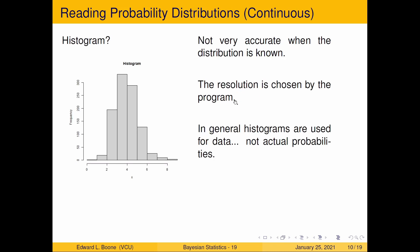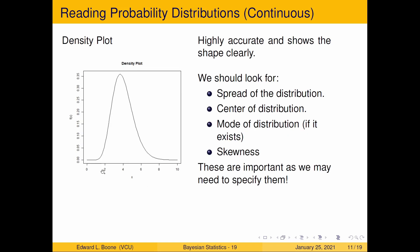So let's talk about a continuous distribution. Again, you can use a histogram, but it's not very accurate when the distribution is known. We know the probability density, so why would we use a histogram? The resolution is chosen by the program you use — maybe R or SPSS — and you're stuck with it. In general, histograms are used for data, not actual probability distributions. So we'd instead use a density plot. It actually shows the curve — it's highly accurate, with a point at almost every value, all interpolated, so it looks like a smooth curve.